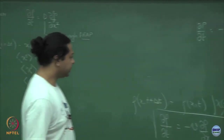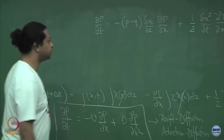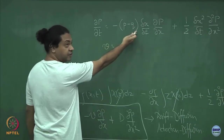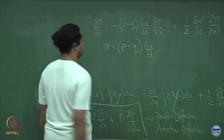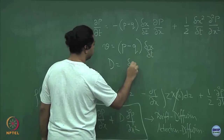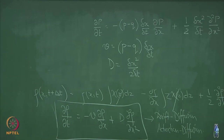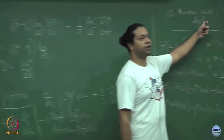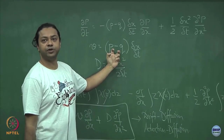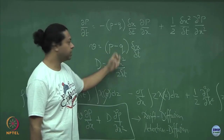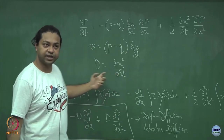Dividing through by delta t, this is exactly the same form as the drift-diffusion equation, once I identify the proper forms of velocity and diffusion coefficient. The velocity is v = (p minus q) delta x / delta t, and the diffusion constant is D = delta x squared / (2 delta t). So the moment you have a random walk where it is more likely to hop in one direction, that translates automatically into a net velocity proportional to the difference (p minus q). If p equals q you get an unbiased random walk with velocity zero, recovering the standard diffusion equation.